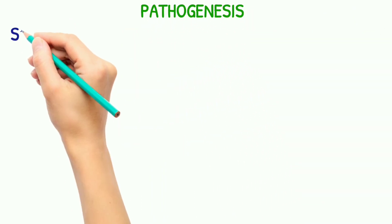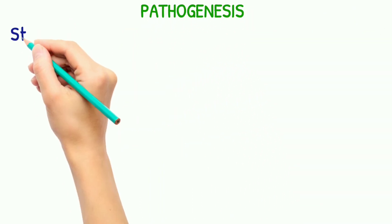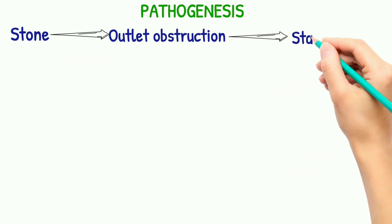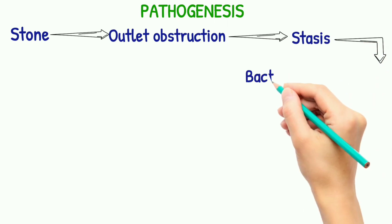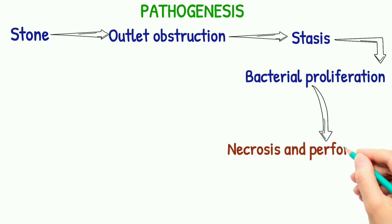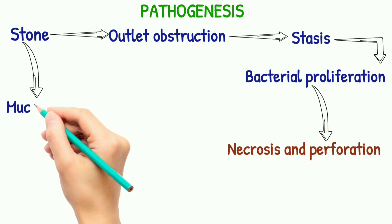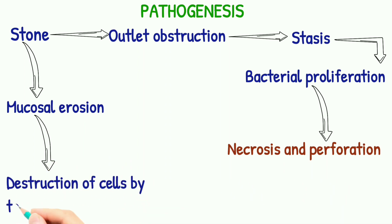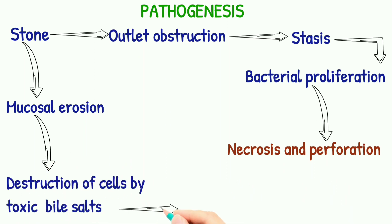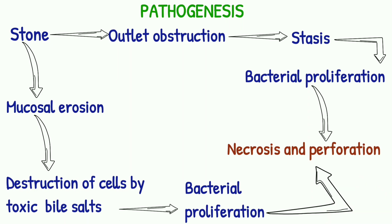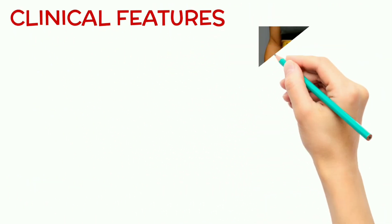In the pathogenesis, when a stone is present in the gallbladder, there is outlet obstruction, leading to bile stasis, then bacterial proliferation, and ultimately necrosis and perforation. In the second pathway, the stone causes mucosal erosion, leading to destruction of cells by toxic bile salts, which leads to bacterial proliferation and further necrosis and perforation.